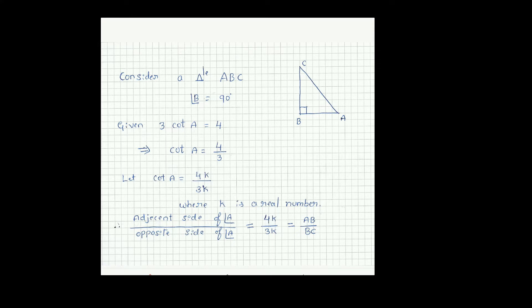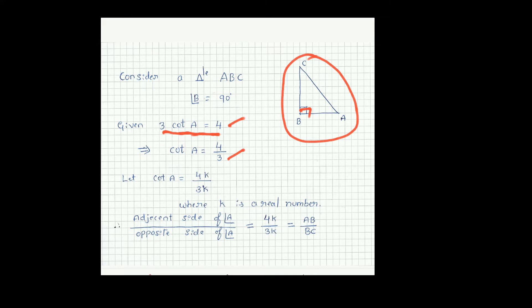So we have to verify. For that, let triangle ABC where angle B is 90 degrees. Given that 3 cot A equals 4. By cross multiplication, cot A equals 4 divided by 3. Let cot A equal 4k divided by 3k, where k is a real number.